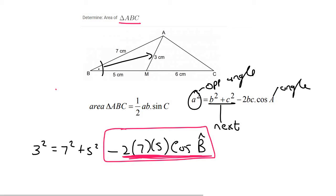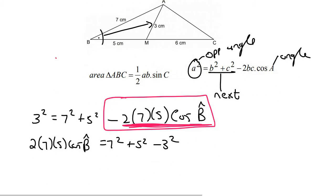So that's going to give us, just to get rid of the negatives, that's going to give us 2 times 7 times 5 times cos beta on the left equals 7 squared plus 5 squared minus 3 squared on the right. And so you can type all of the right hand side in on the calculator.